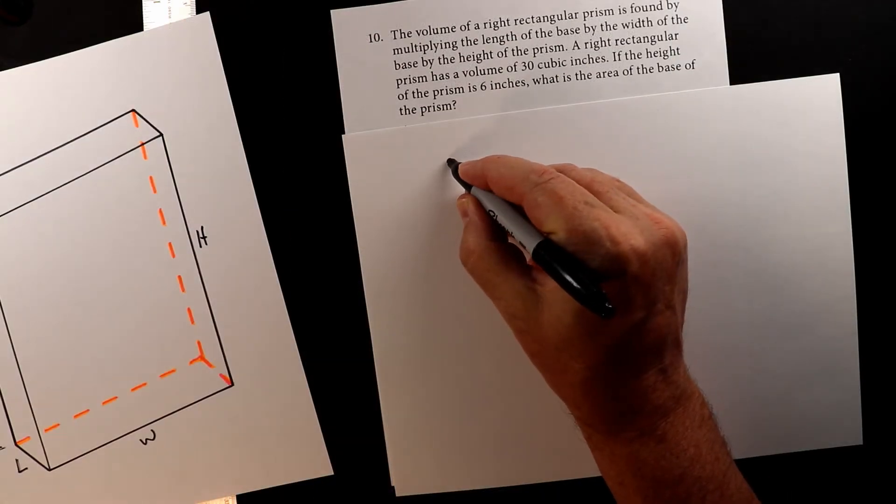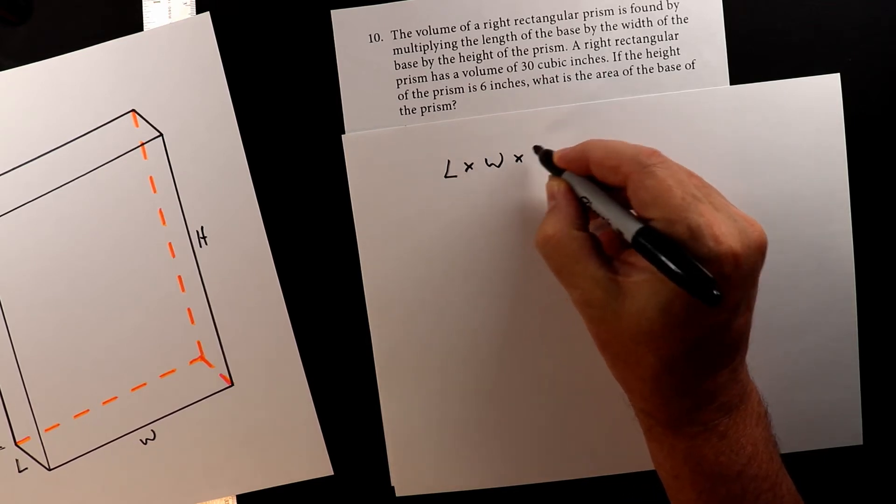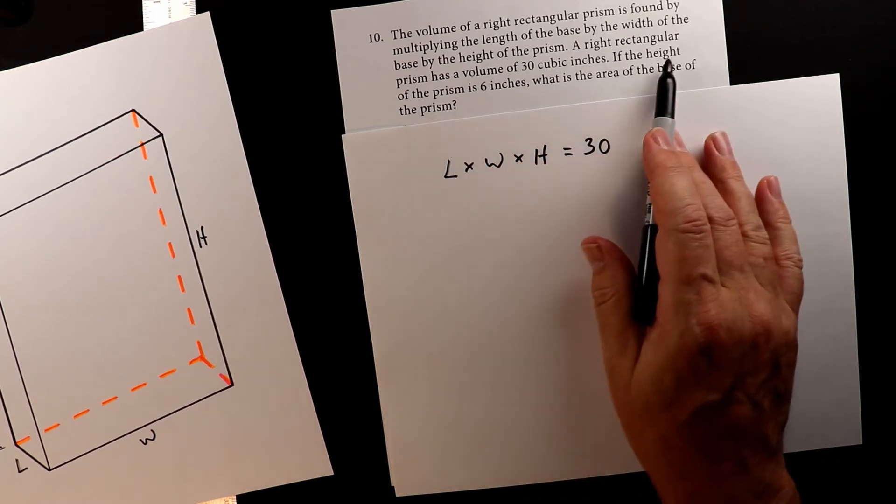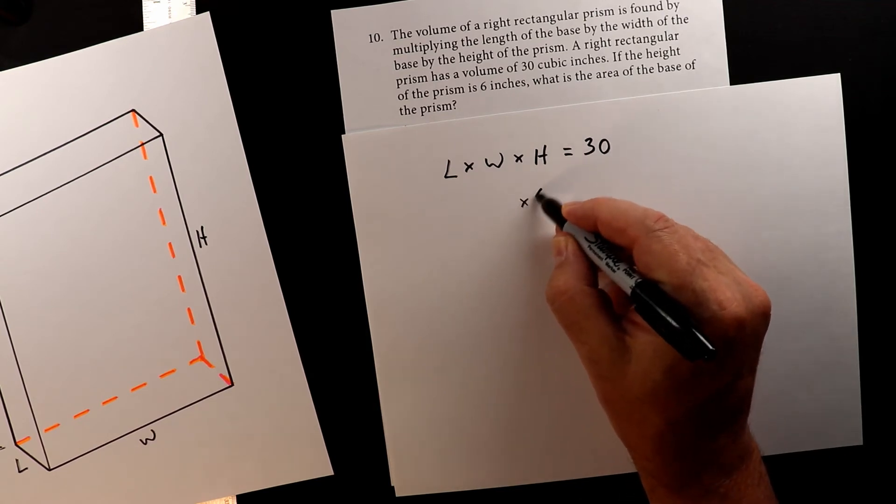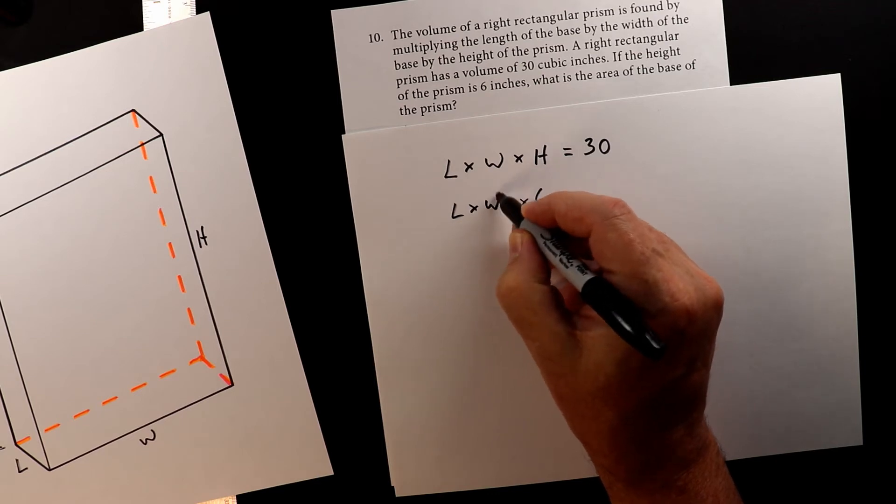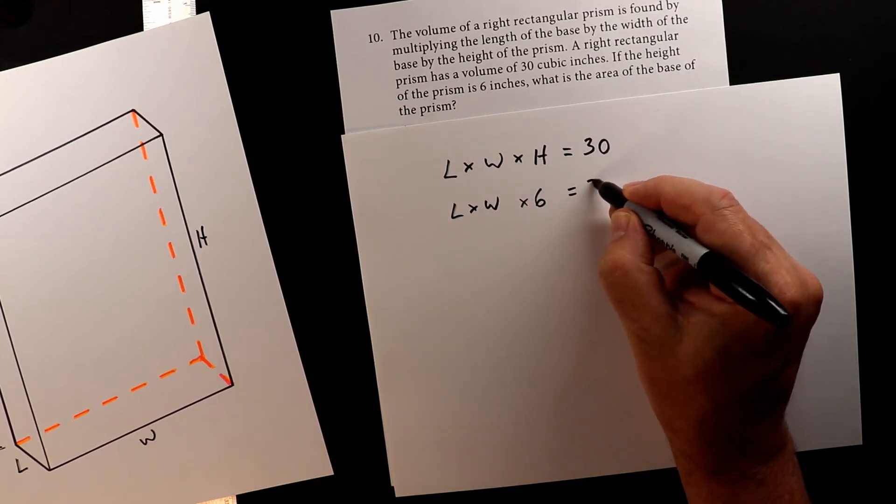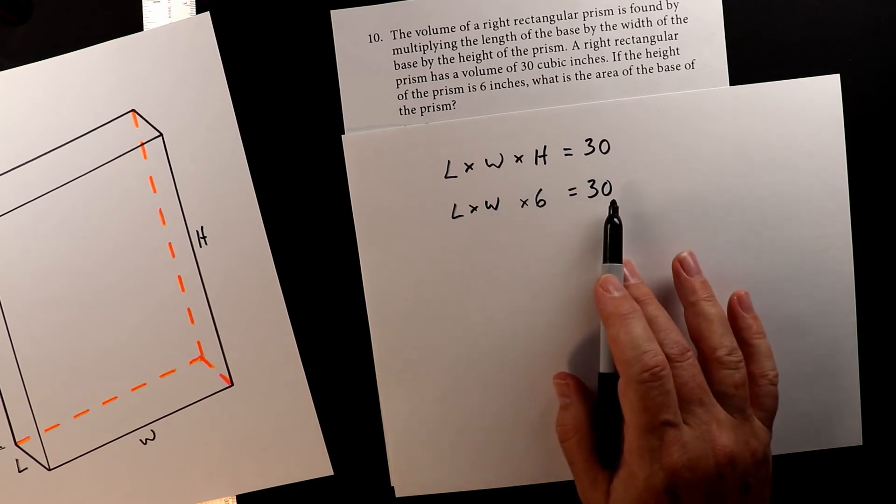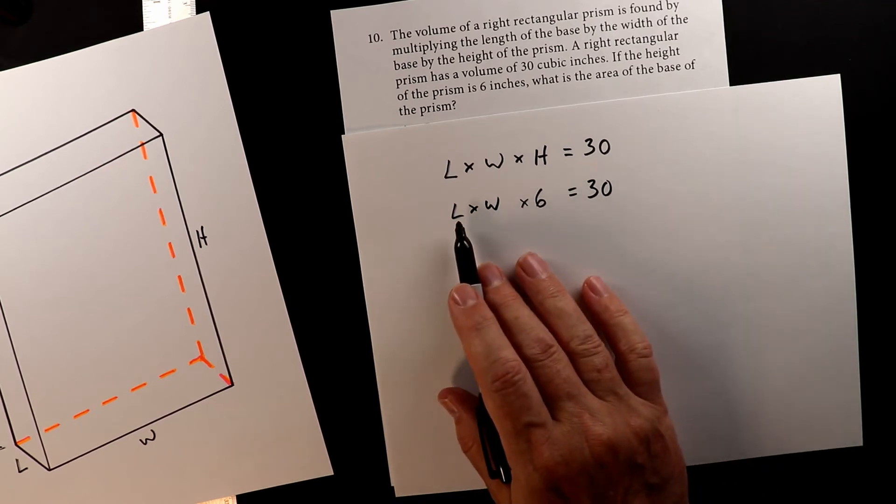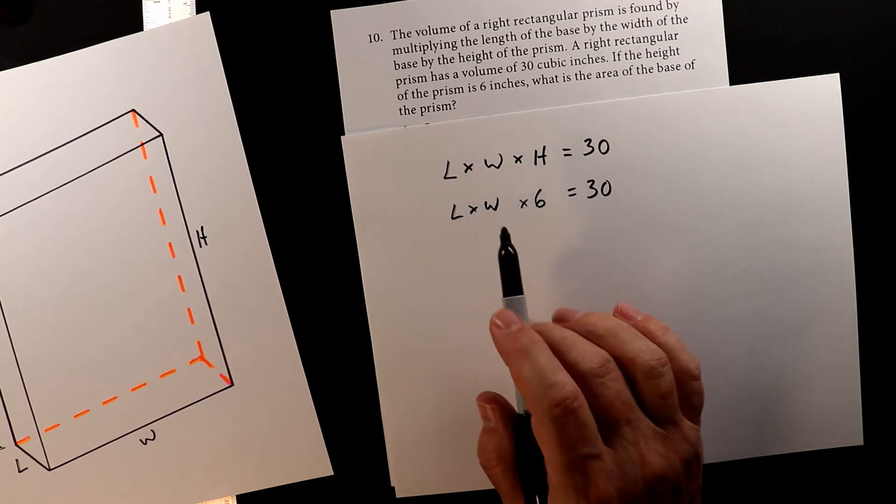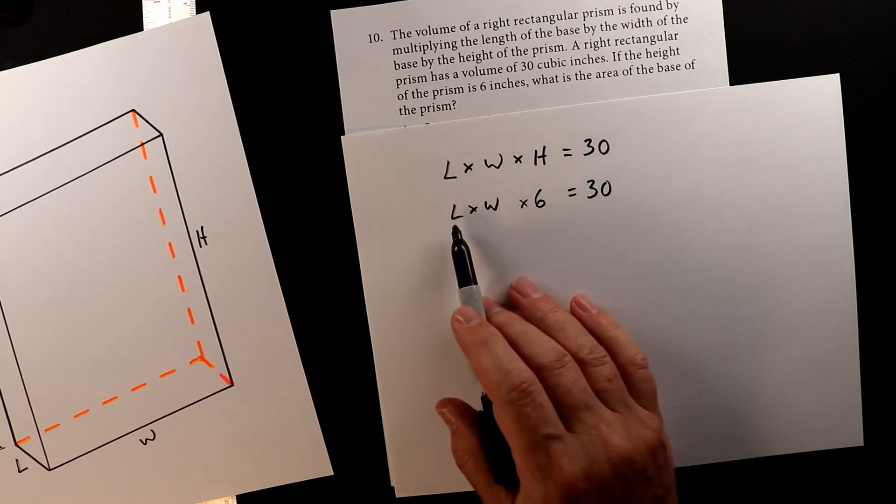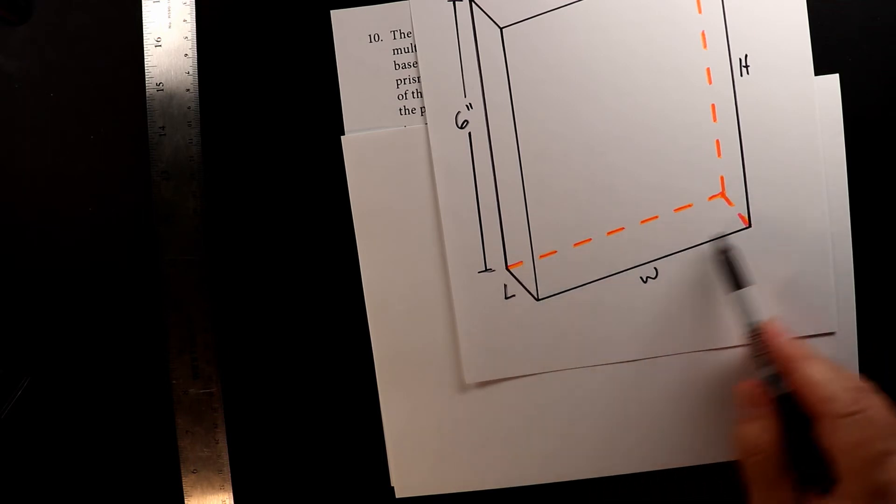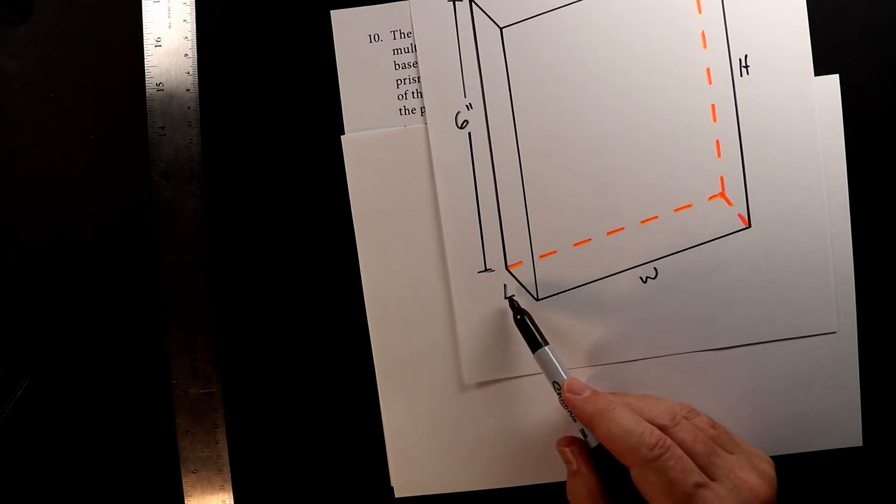So length times width times height equals 30. Now we do know the height of the prism is six. So that means that L and W is unknown. So we have six times these two numbers together will give us 30. Now the nice thing here is they're not asking you to tell us individually what these are. They're saying together we have to figure out the area of the base. We have to find out how much space this area is, this two-dimensional shape, this rectangle. What is the length times the width?